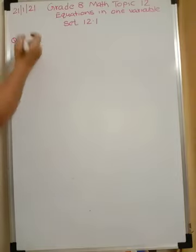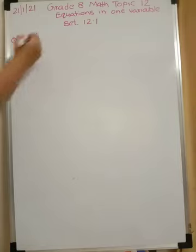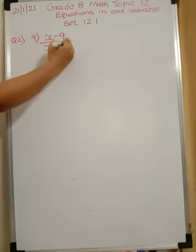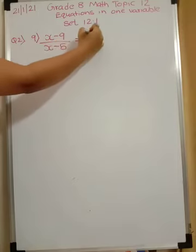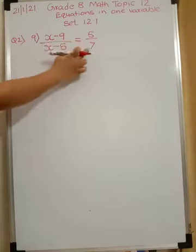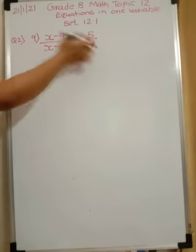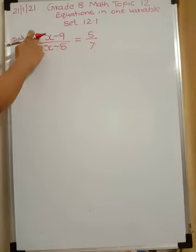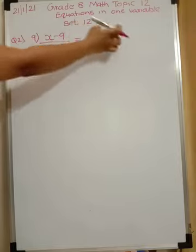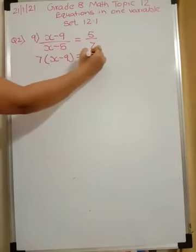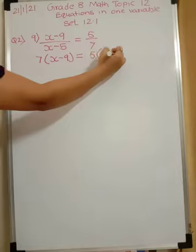So you have the 9th problem here now. X minus 9 upon x minus 5 will be equal to 5 upon 7. Now you are going to multiply these two terms by 7 and you are going to multiply x minus 5 by 5. Here it is in division, here it will come in multiplication. Here it is in division, it will go in multiplication. So you have 7 times x minus 9 is equal to 5 times x minus 5.